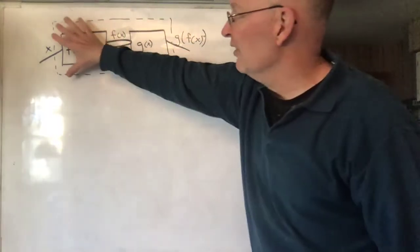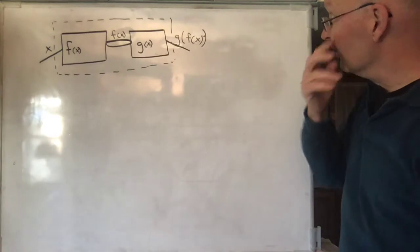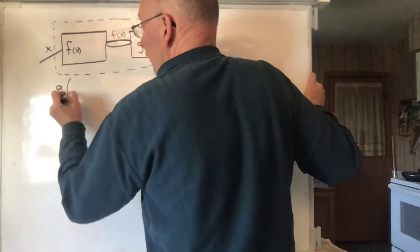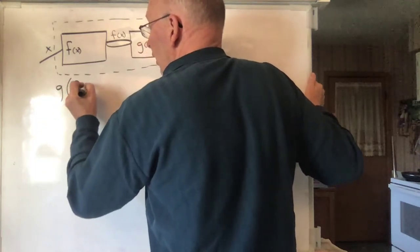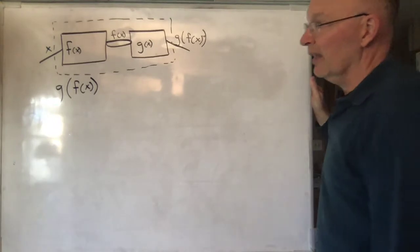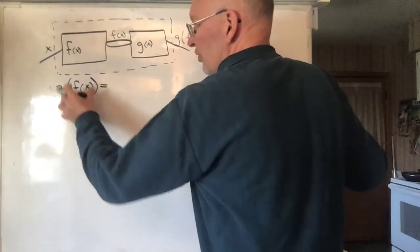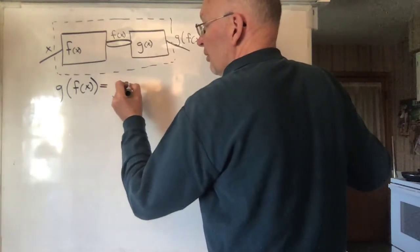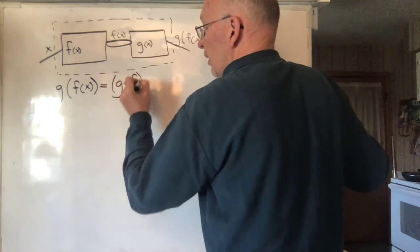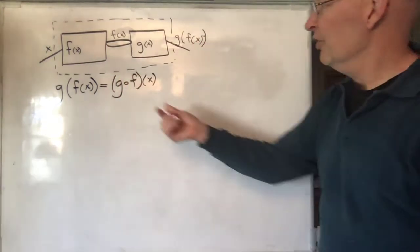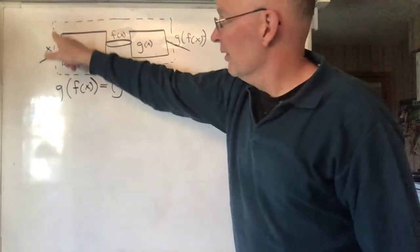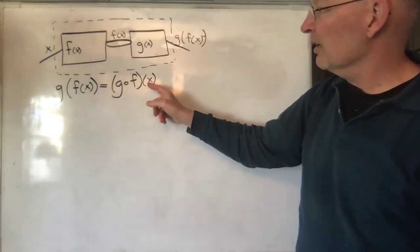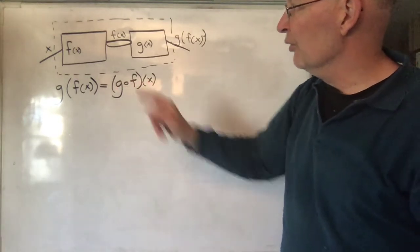This whole function, which is made up of these other two, is called the composition of these other two. You get G of F of X. You can either write it like that, or another way — using a little circle — is to write G∘F of X. This makes clear that X goes into F first, and then goes into G.